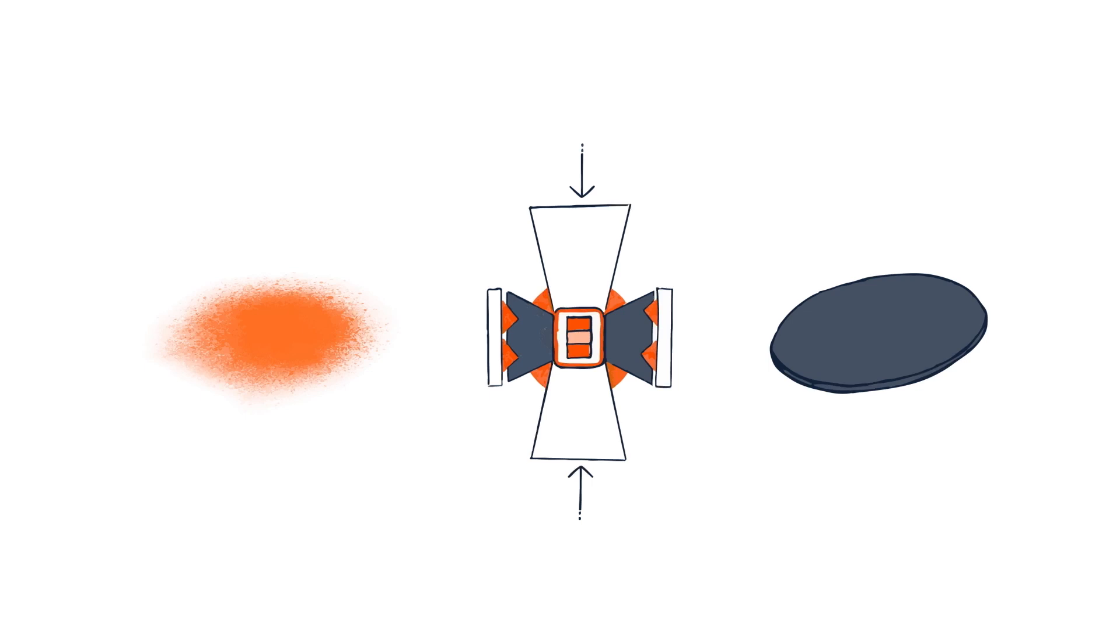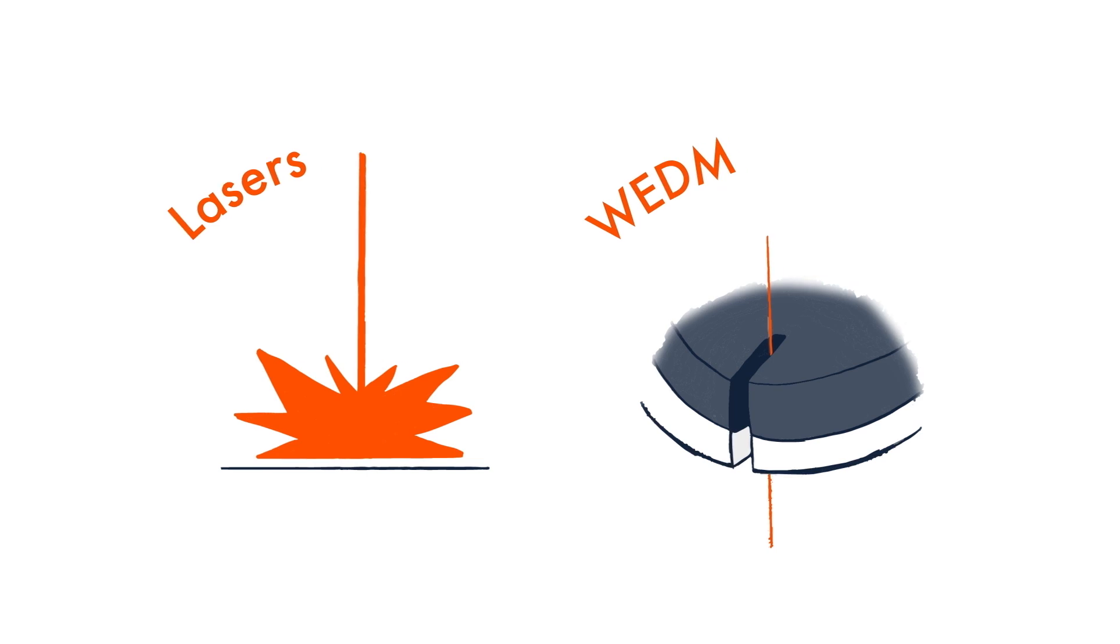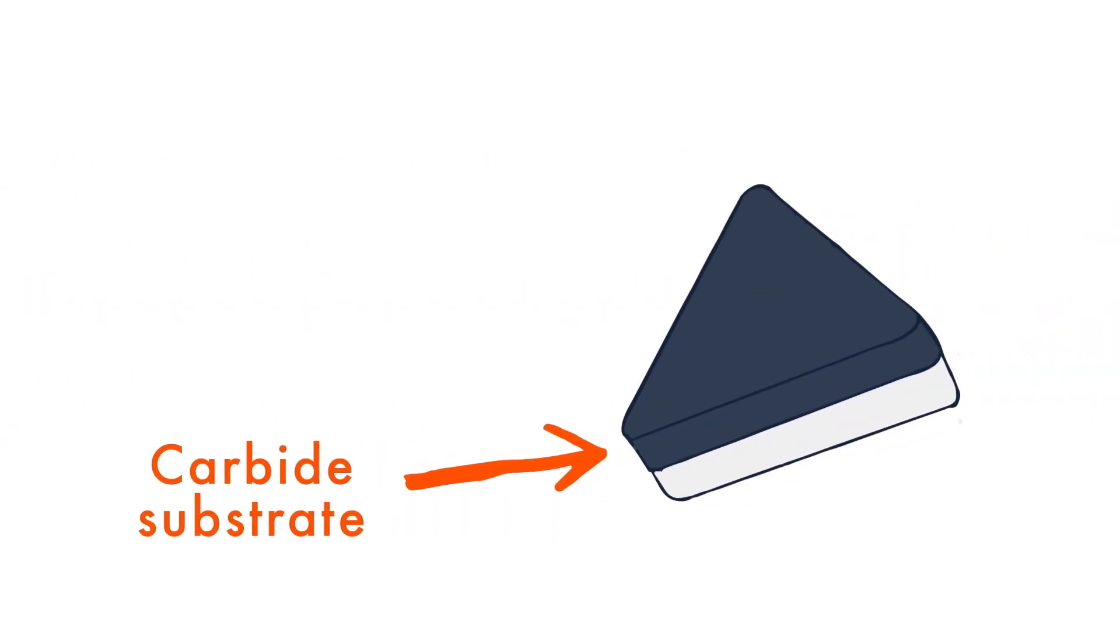To manufacture PCBN, we subject CBN crystals to the HPHT process once again, sintering them into polycrystalline discs. To manufacture cutting tools, we cut small segments with lasers or wire electric discharge machining (WEDM), and our customers braise these segments to a carbide tool blank.